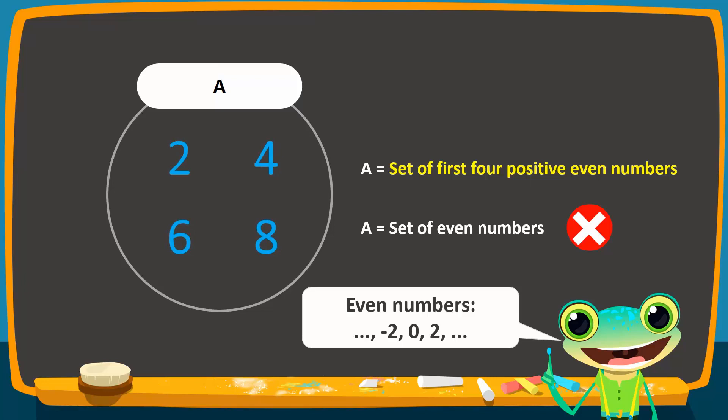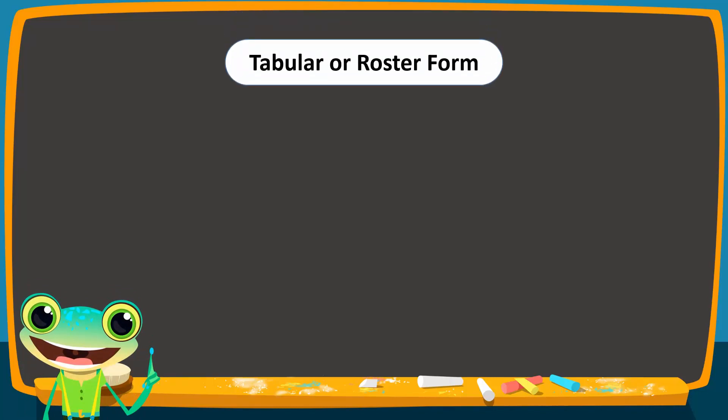Therefore, when describing sets, we must be both accurate and precise. The second way to express a set is called the tabular form or roster form. In this form, all the elements of a set are listed in braces. All individual elements are separated by commas.